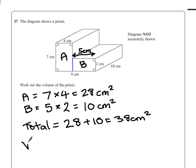To find the volume then, we multiply the area of our cross section, which is 38, by the depth of our shape, the length of it, which in this case is 10 centimeters. Giving us a final volume of 380.